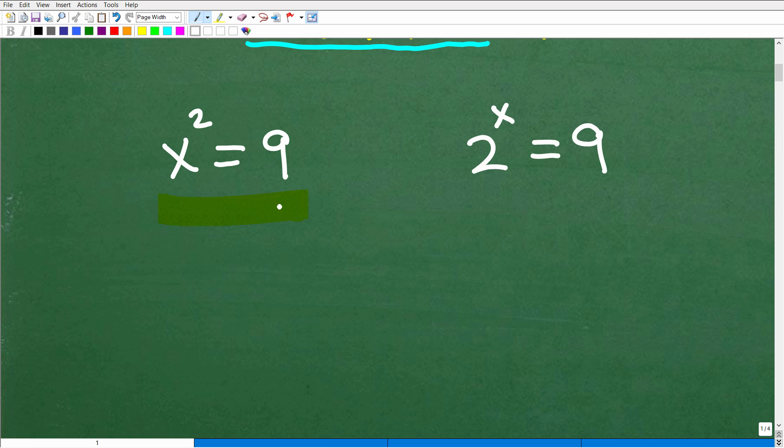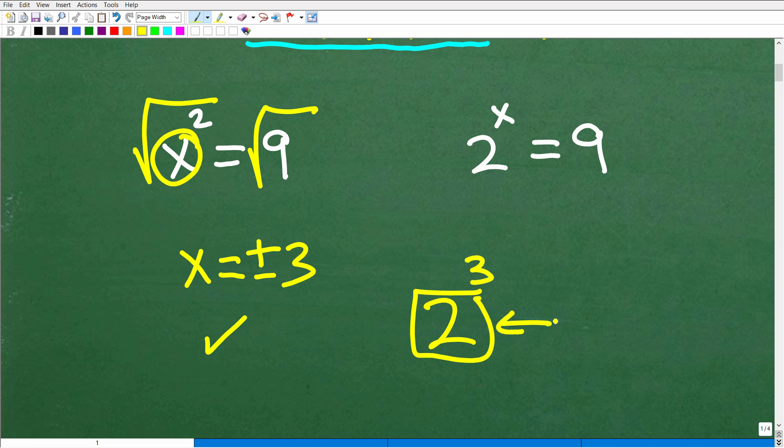Hopefully you recognize this as a quadratic equation. It's x to the second power. The variable we're solving for is the base. So how do we solve this particular equation? Pretty simple. All we need to do is take the square root of both sides. We're going to get x equals positive and negative 3. But when we switch the objective here, let's make sure we understand this as well.